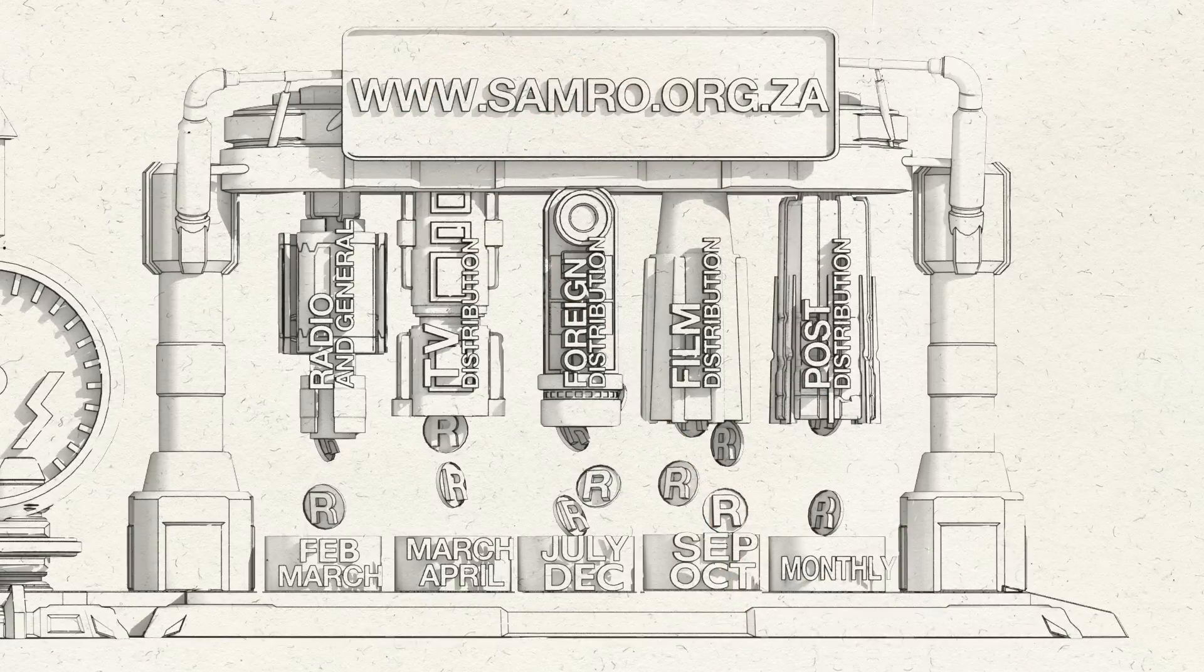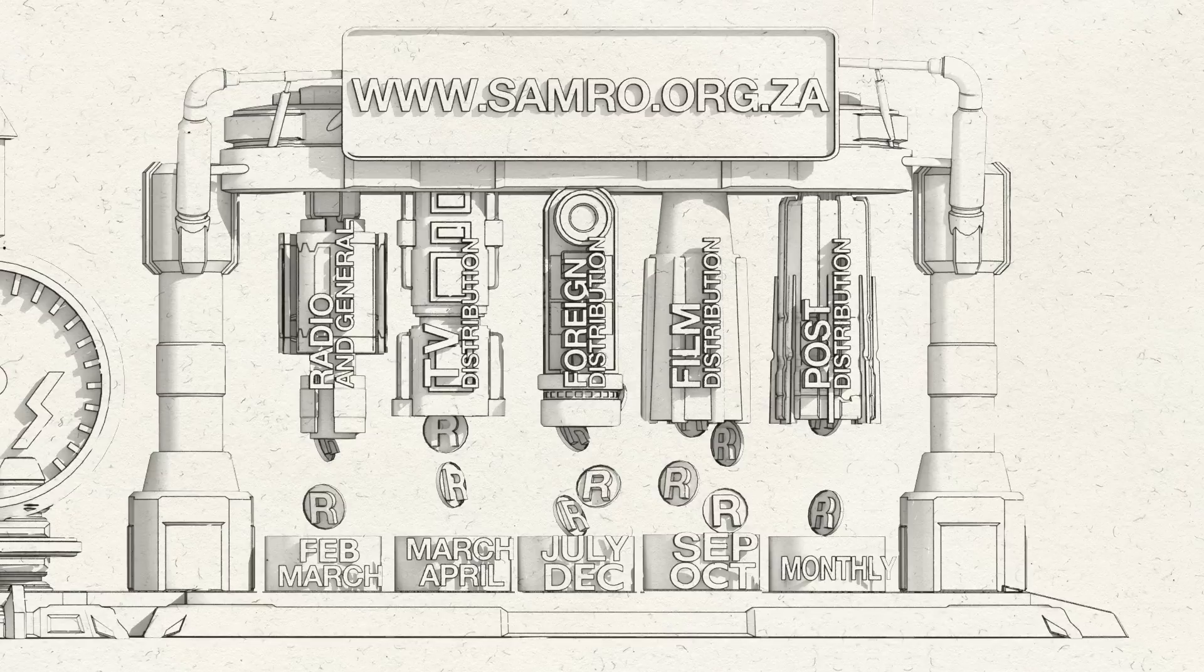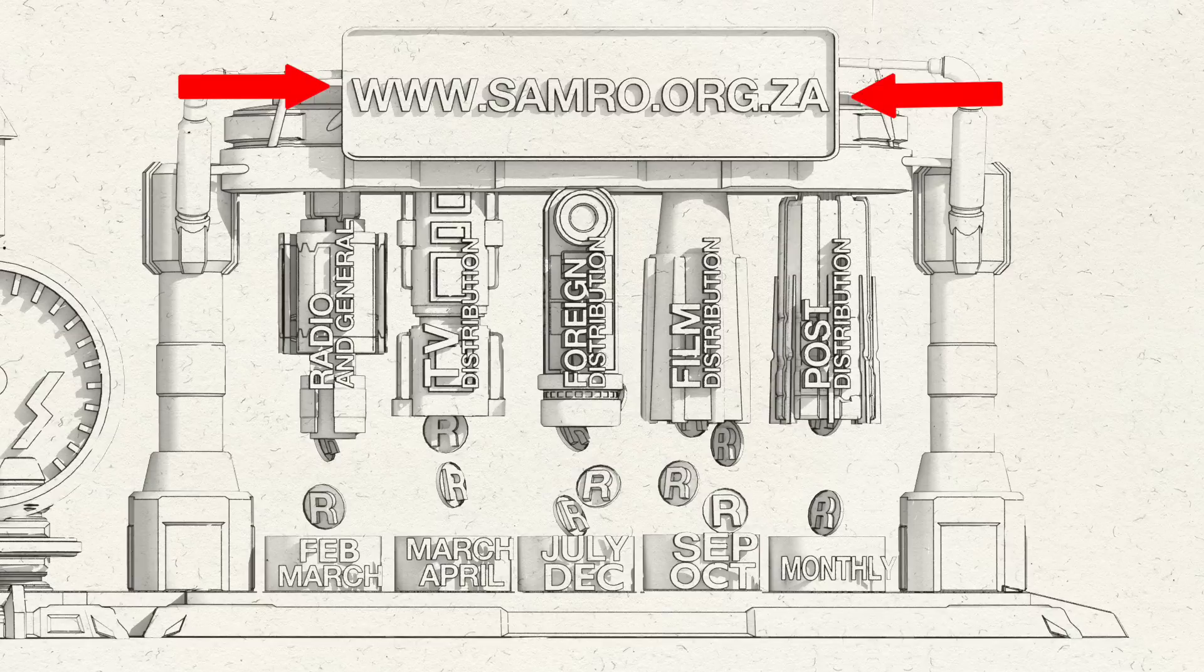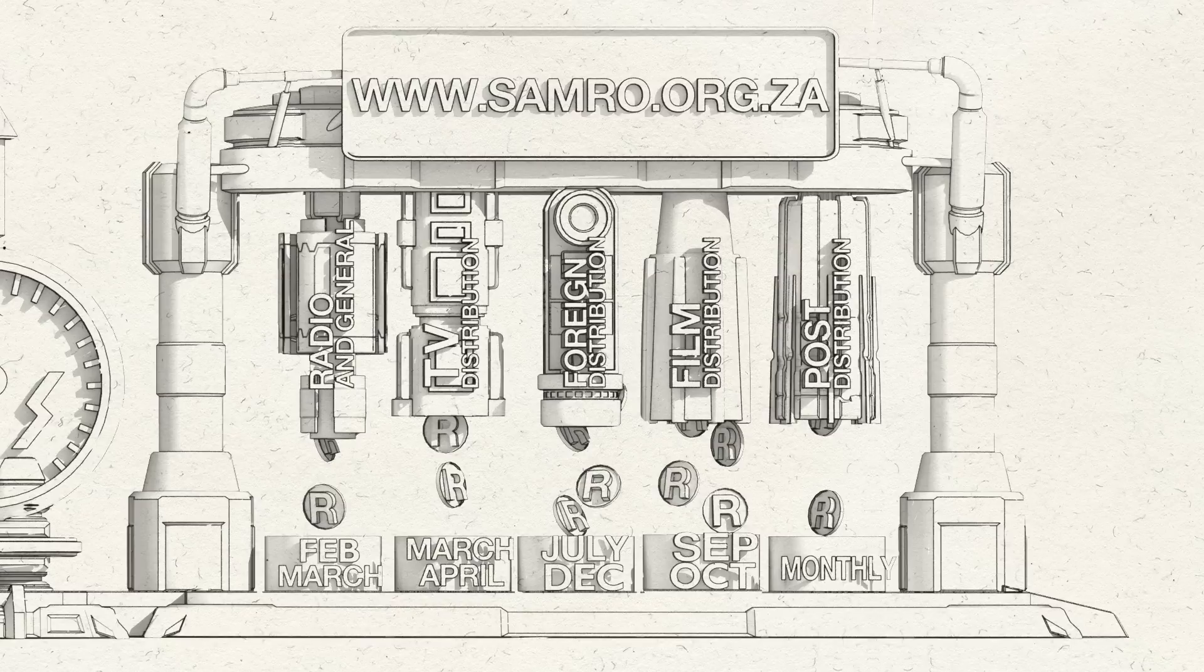All money from any of these distributions gets paid directly into your bank account. And as a SAMRO member, you can check out your previous distributions on the SAMRO web portal, where you can also keep your personal information and banking details up to date to ensure we can keep in touch and you can get paid.